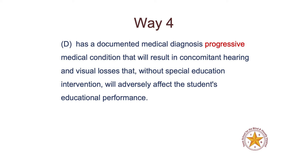The fourth and final way is if the student has a documented medical diagnosis of a progressive condition expected to lead to both hearing and vision losses. Typically this is our students with Usher syndrome, but of course there are many other syndromes. With advancements in medical technology and genetic testing, we're finding these kids in infancy — where we used to not find them until they had symptoms in middle school or high school. So when babies get a diagnosis at three or four months old, even with normal hearing and normal vision, we can start serving them and preparing them for the future.